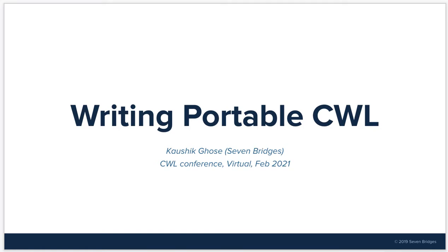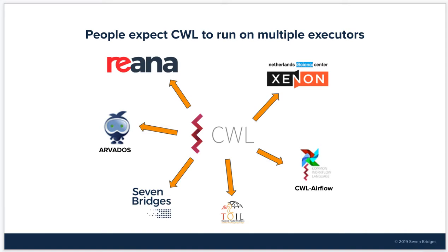Hello, I'm Koshik Kosh from Seven Bridges, and today I will talk about how we write portable CWL. CWL has a promise, and the promise is that it's going to be portable. You can write a CWL workflow and test it on one executor, such as the CWL tool reference runner, and you can take the same CWL without modifications and run it on another runner, such as Toil, or on a cloud platform, such as Seven Bridges.